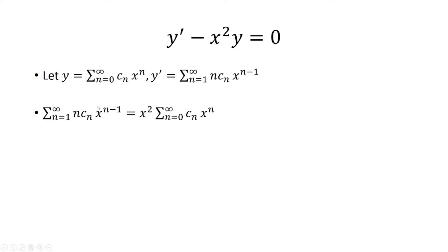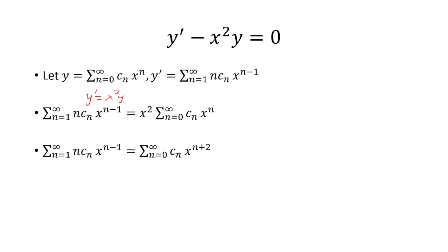Now we're going to replace y and y prime into the differential equation. I skipped a step and just added x squared times y to both sides. This x squared is going to distribute inside the sum because it does not depend on n, so that gives x to the n plus 2.